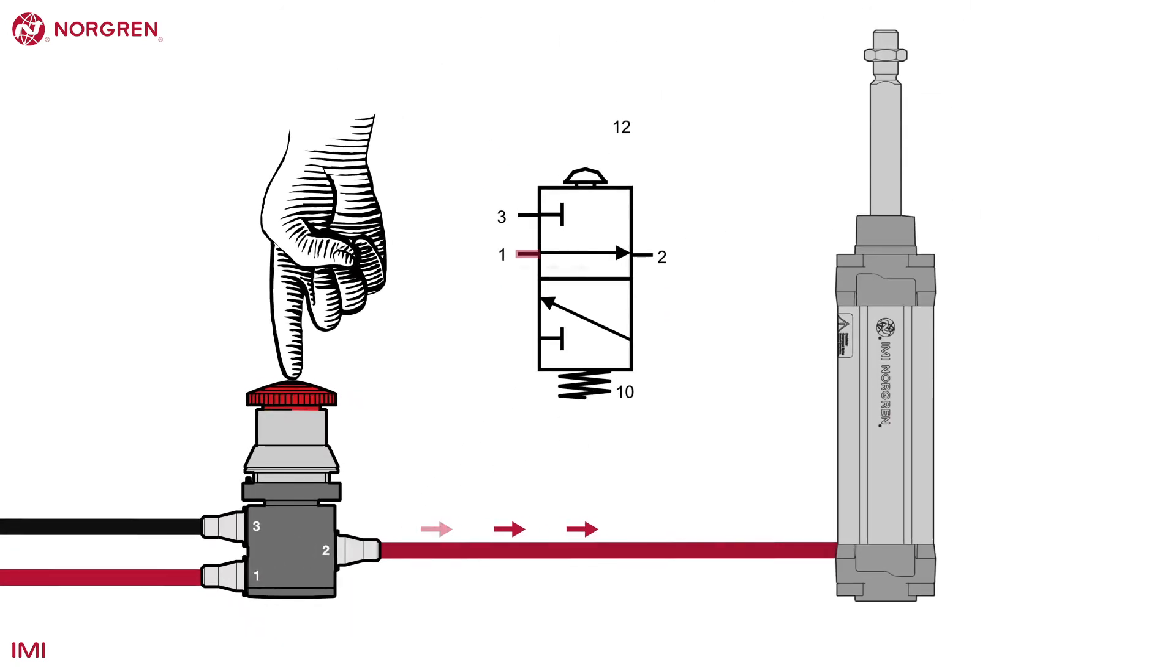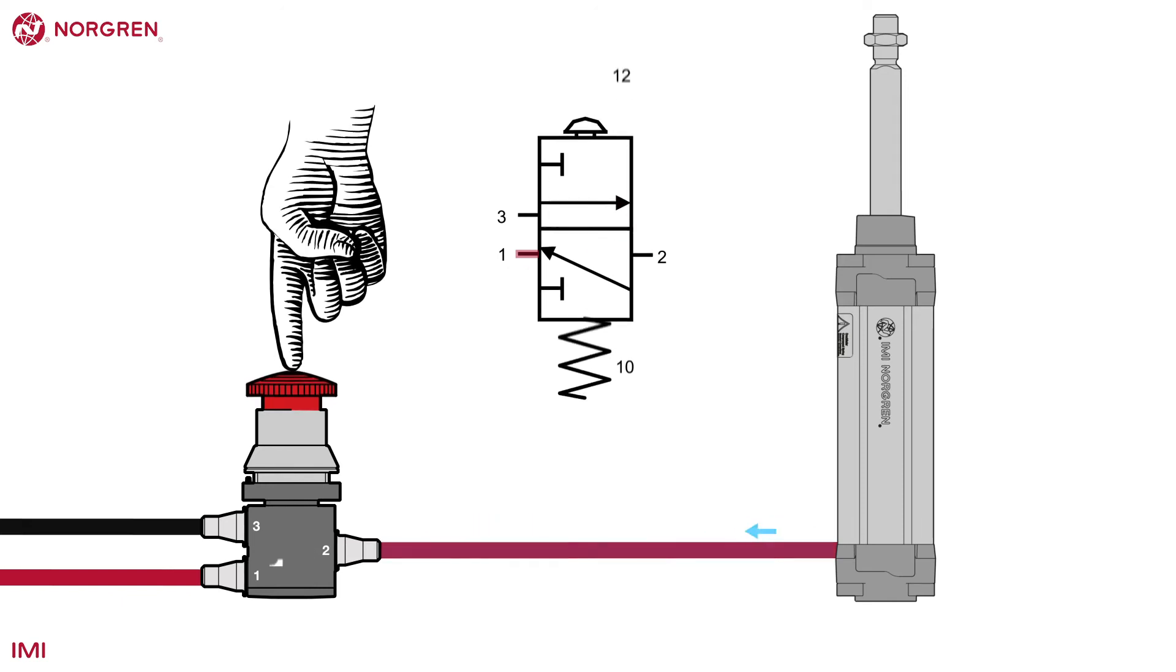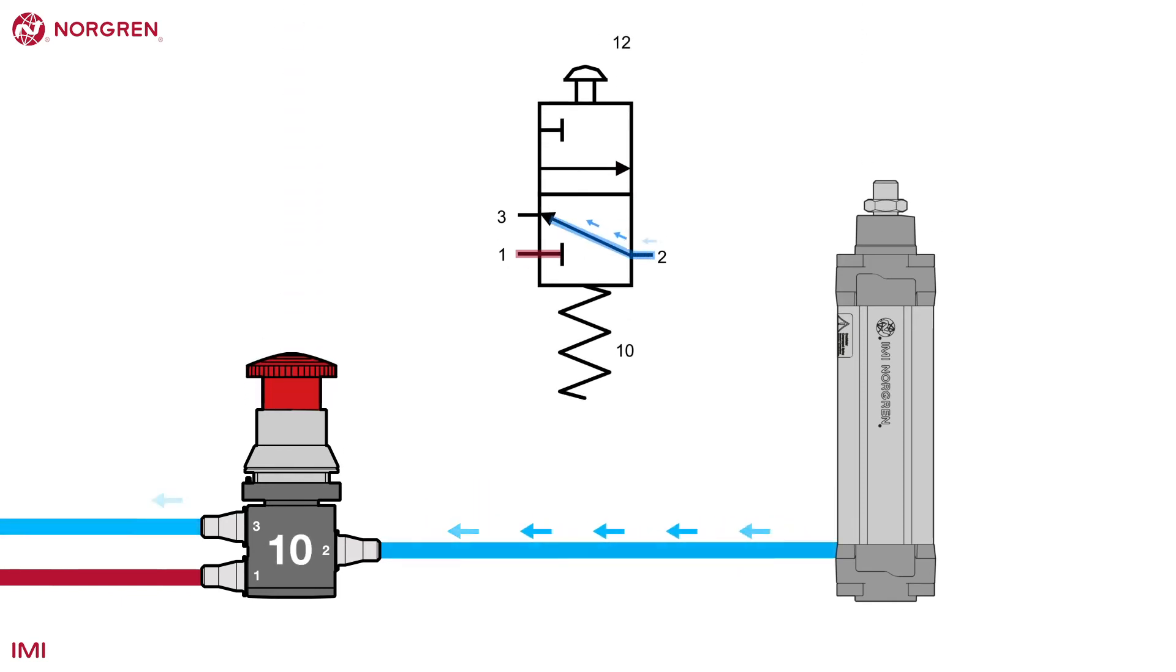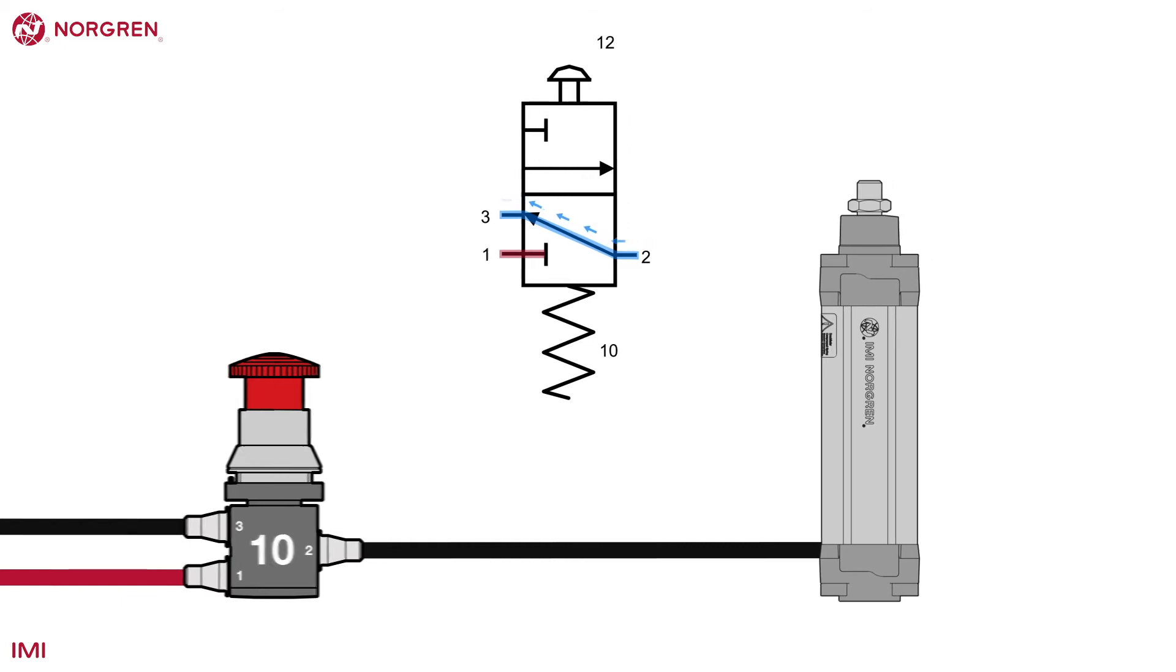When the button is pressed, the valve moves into the 1-2 position and air passes through the valve to the cylinder. When the button is released, the valve moves back into the 1-0 position and the air between port 2 and the cylinder vents through the exhaust port.